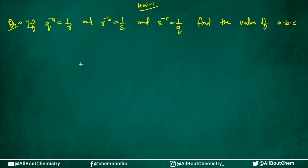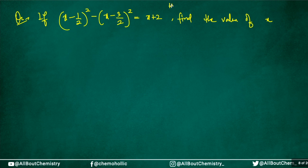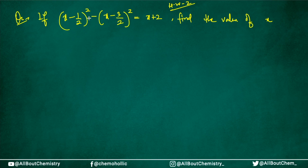Now I'll give you some homework questions. Homework question 1: if q^(−a) = 1/r, r^(−b) = 1/s, and s^(−c) = 1/q, find the value of a·b·c. We just did a similar question — try it on your own. Homework question 2: if (x − 1/2)² − (x − 3/2)² = x + 2, find the value of x. You can open the brackets or apply the a² − b² = (a+b)(a−b) shortcut.